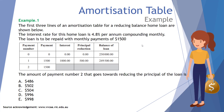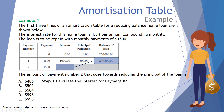Example one: the first three lines of an amortization table for a reducing balance home loan are shown. The interest rate is 4.8 percent per annum compounding monthly, with monthly payments of fifteen hundred dollars. The question asks: what amount of payment number two goes towards reducing the principal? Step one: calculate the interest for payment two. We don't have a complete set of values to do simple subtraction, so we calculate it as a percentage — 4.8 percent per annum compounding monthly.